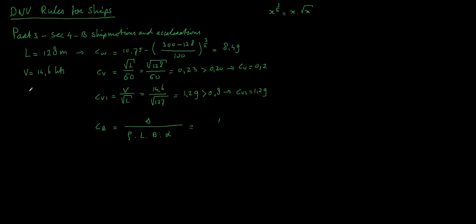In our case we have a displacement of 14,850. The length was 128, times rho which is 1.025, times the beam of the vessel, which is 22.8 meters, times the depth, which is 7.2 meters. That would be something like 0.69.